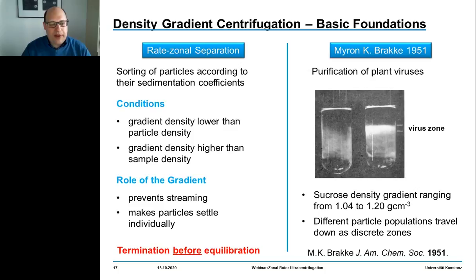The important prerequisite is that the density of the particles must always be higher than the highest density within the gradient, while the sample density (particles plus dispersant) should be lower than the lowest density in the gradient. You must stop the experiment before equilibration, otherwise you end up with a pellet. I would now like to hand over to my colleague Simone Plüsch.